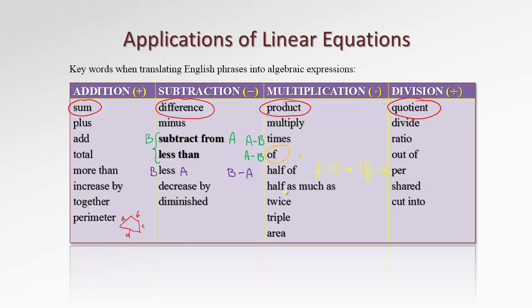Other multiplication keywords: twice means multiply by 2, so 2x. Triple means 3 times something. And here's an interesting word — area. Area indicates multiplication, usually base times height. That would be the area of a rectangle, parallelogram, rhombus, or triangle. For a triangle the formula involves half a base, but the idea is still multiplying base-related and height-related quantities. So area indicates multiplication, and perimeter indicates addition.